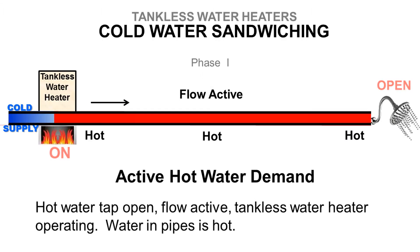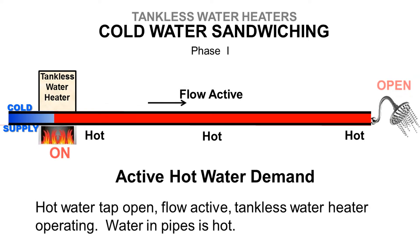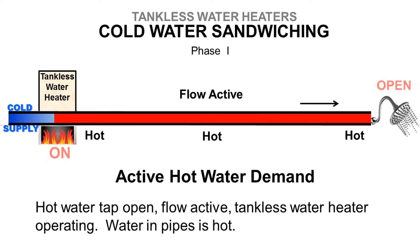Phase 1: Hot Water Tap Open, Flow Active. The tankless water heater is operating, and the water in the hot water pipes is hot.